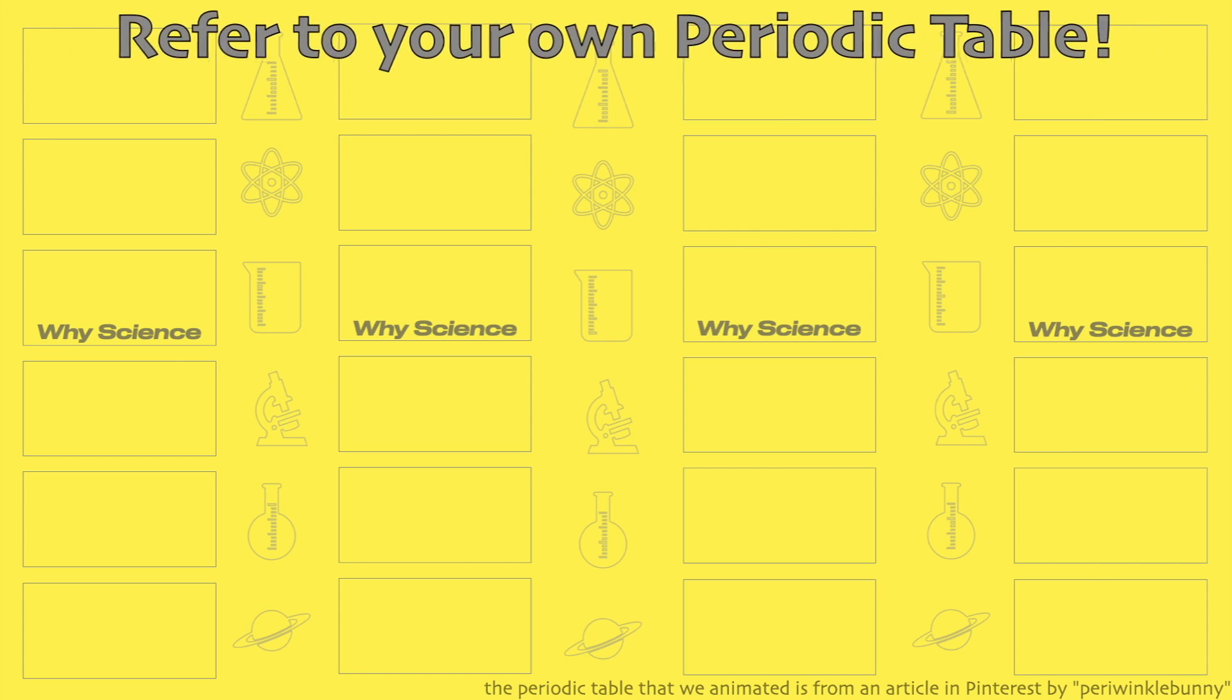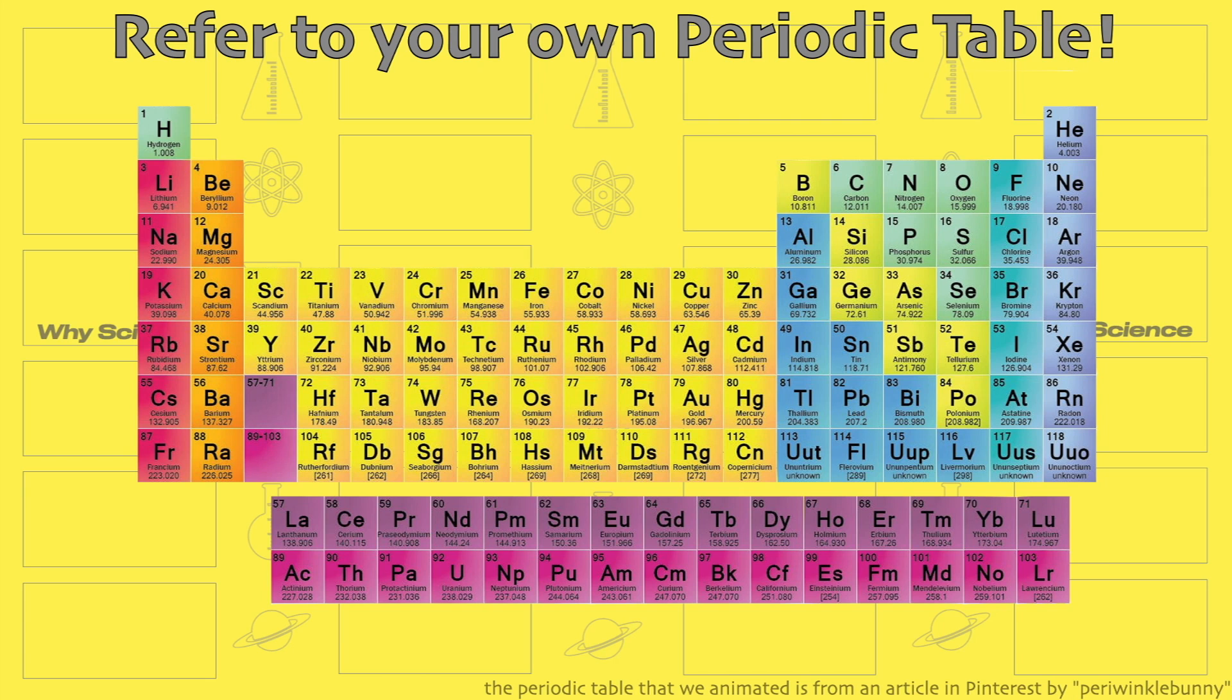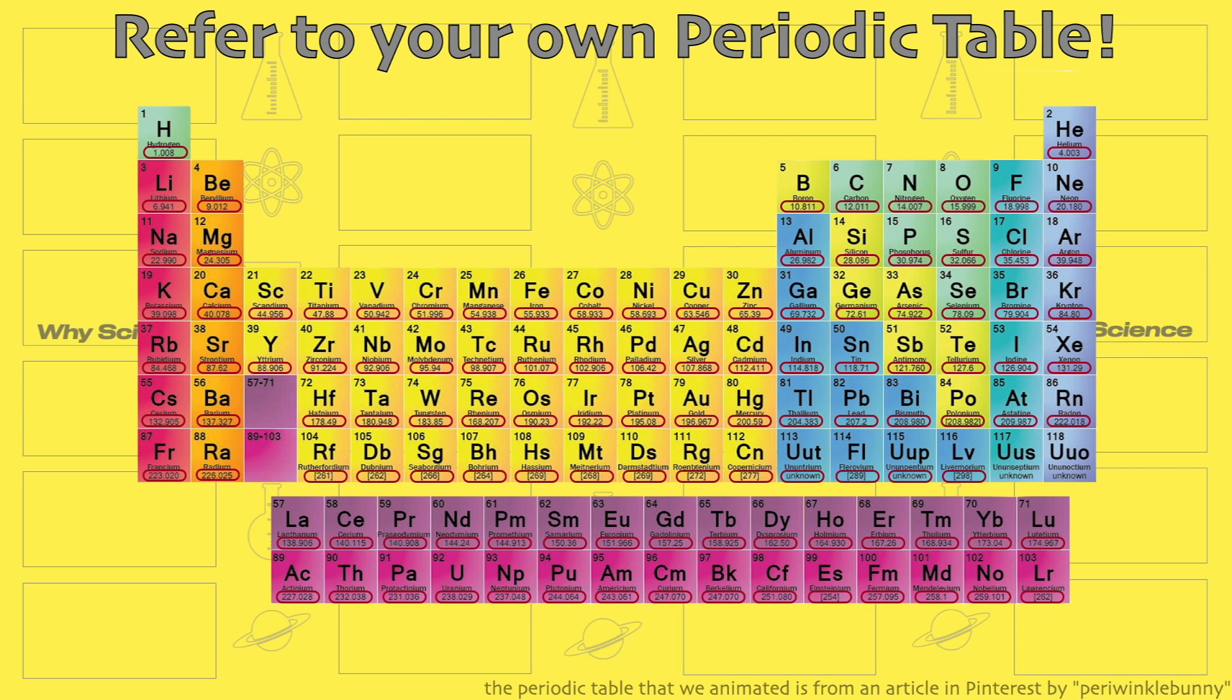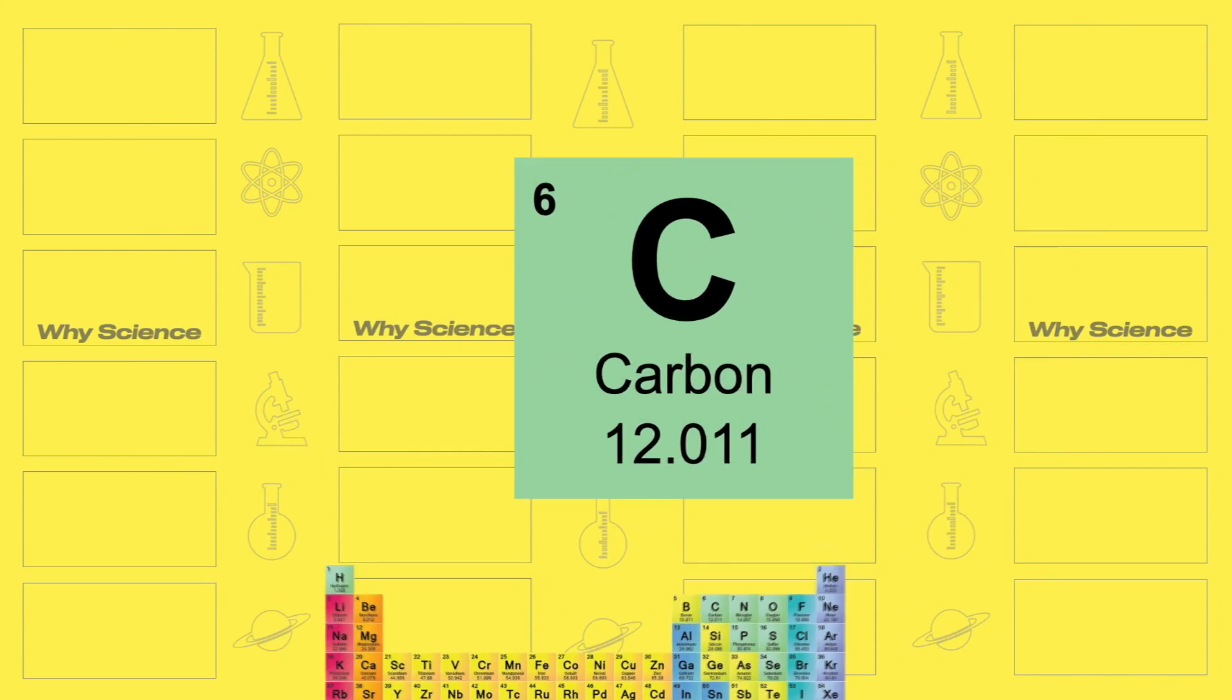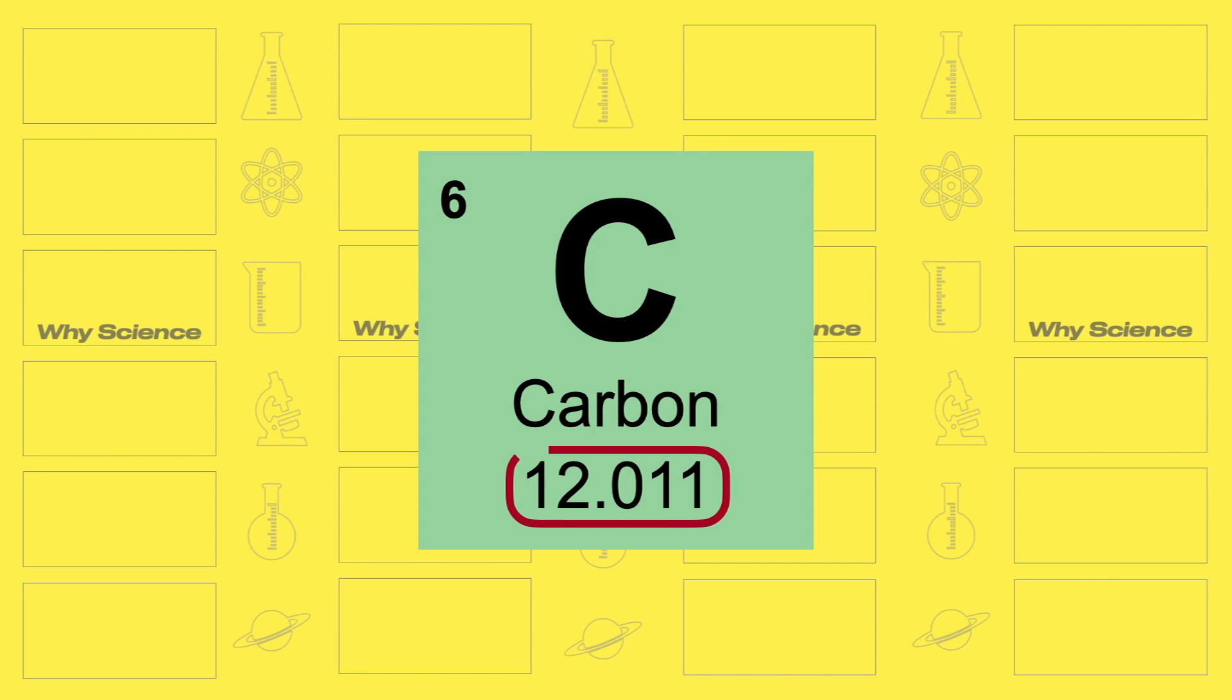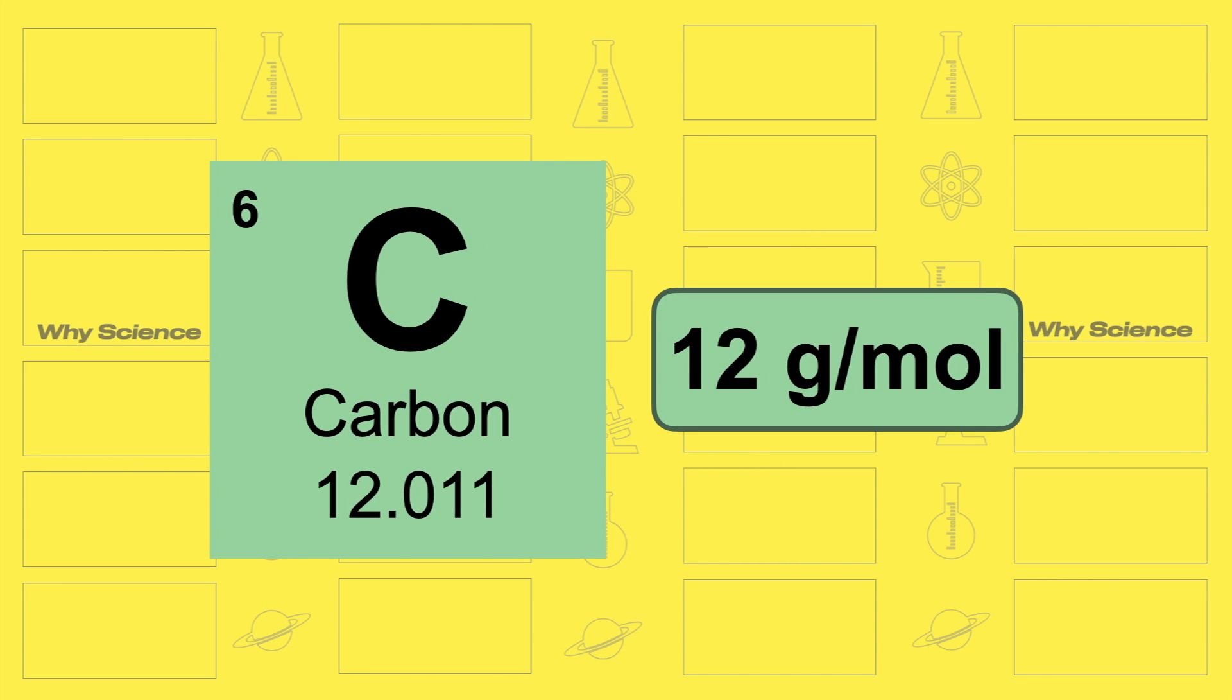The next step is identifying the individual masses of all the elements present in the compound. The easiest way is by looking at the periodic table. It is usually placed below the element symbol but the safest way to find it is to look for the numerical value with long decimal digits. In carbon, the mass is 12.011 or simply 12 grams per mole.